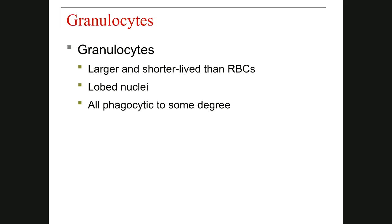The first group is granulocytes. After staining, each of the three types of granular leukocytes displays granules with distinctive coloration that can be recognized under a light microscope. Granular leukocytes can be distinguished as neutrophil, eosinophil, and basophil. They are larger and shorter-lived than red blood cells. They have lobed nuclei, and all of them can do phagocytosis to different degrees.